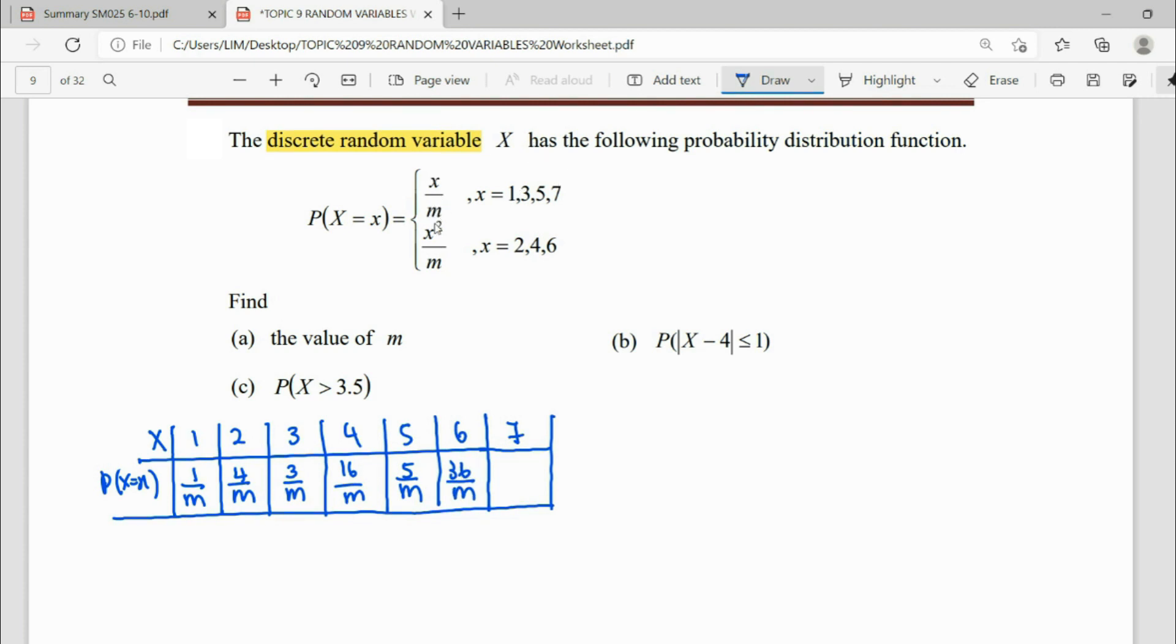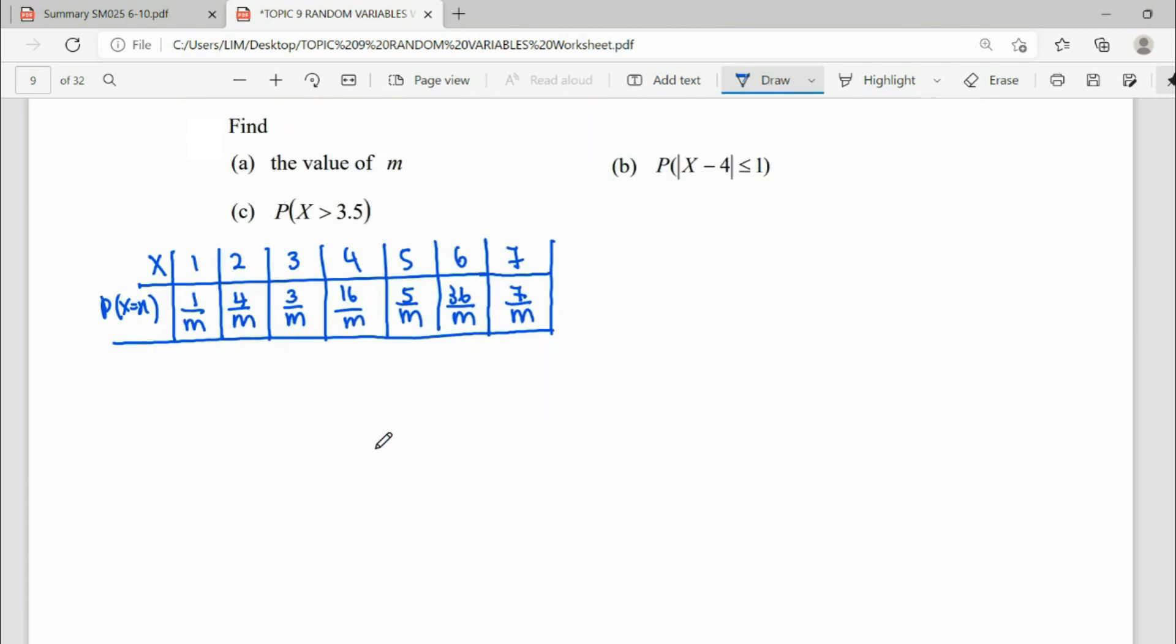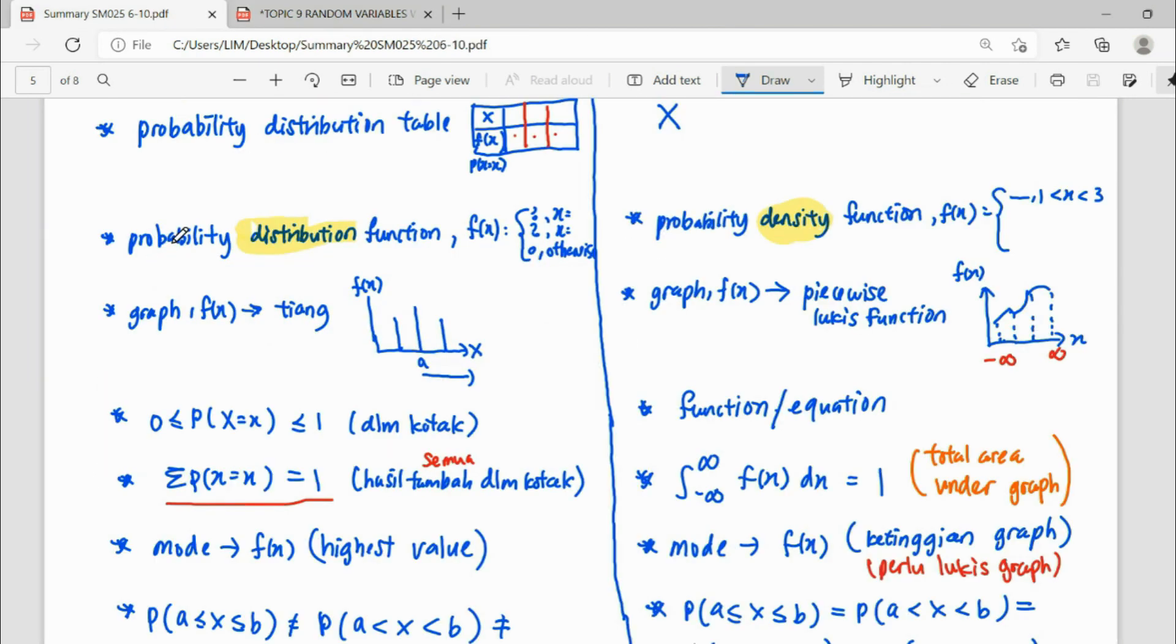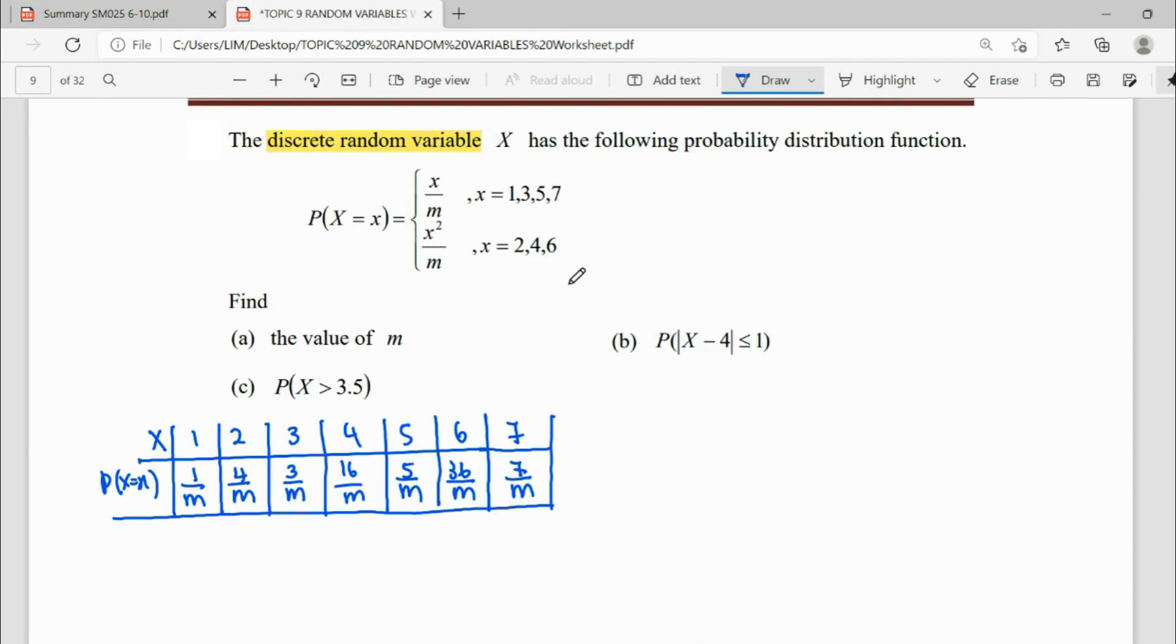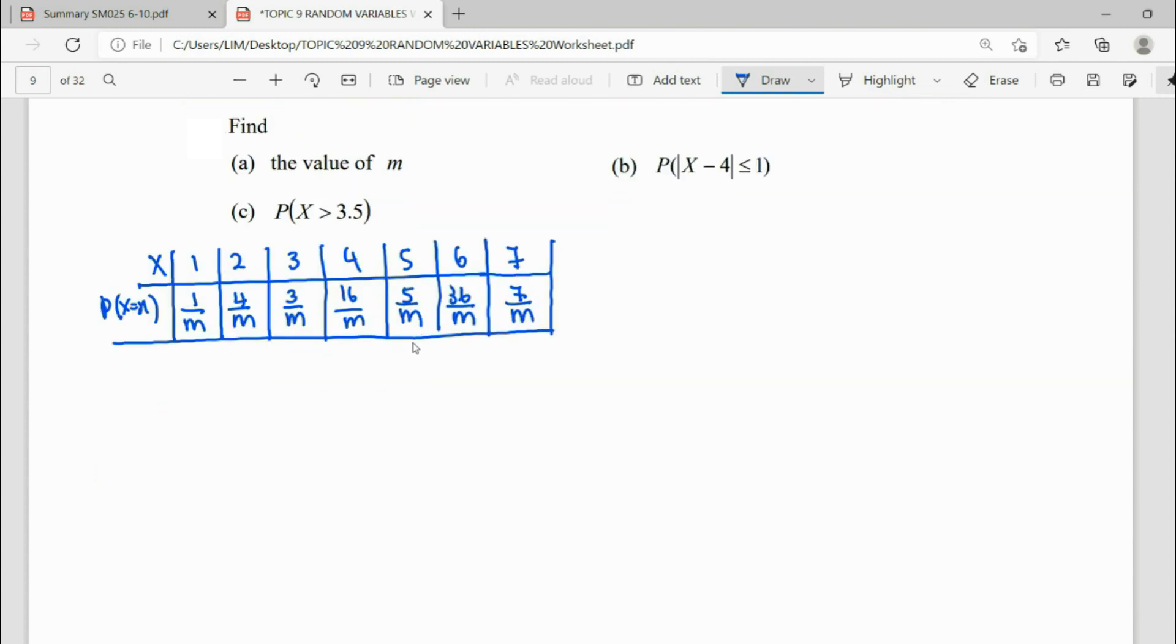7, 7 over m. So we finish the whole part of our discrete random variable. Now we're going to figure out what is our m. As we know, for discrete random variable, we have one property, the characteristic said that total of the probability must be equal to 1. So this question already tells us this is discrete. This random variable will hold for these properties where the total of their probability must be equal to 1.